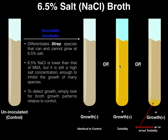The bottom line is: if you have turbidity and/or sedimentation — it doesn't have to be both, either one counts — then you have a growth positive organism in 6.5% salt. But if your inoculated and incubated broth looks identical to the control, it's growth negative.